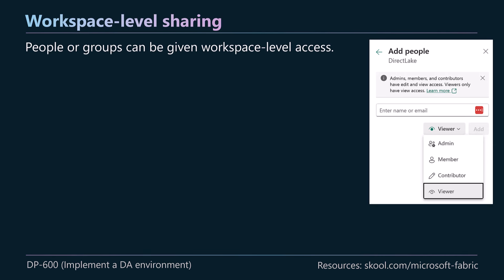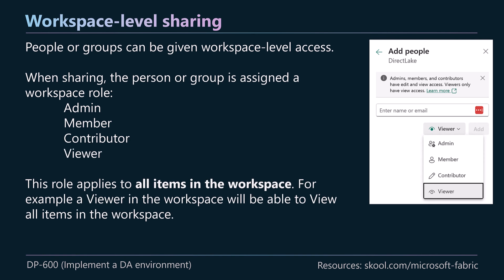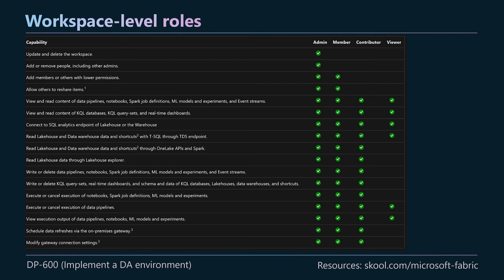We're going to focus on workspace level sharing and item level sharing. People or groups can be given workspace level access, and the person or group is assigned a workspace role. On the right-hand side there are four roles: admin, member, contributor, and viewer. This role applies to all items in the workspace — for example, a viewer will be able to view all items in the workspace.